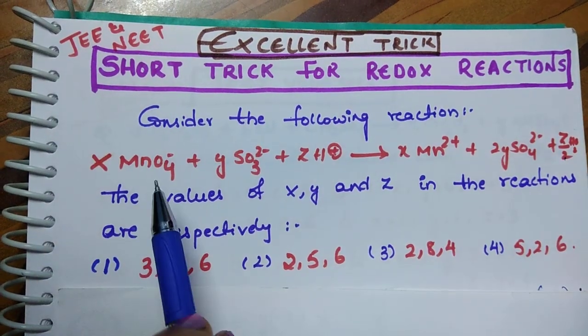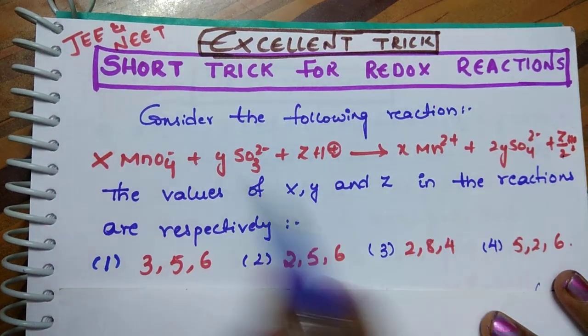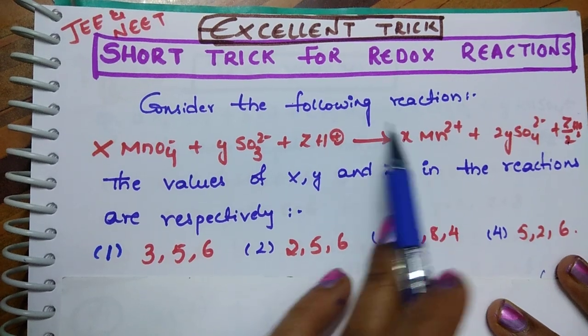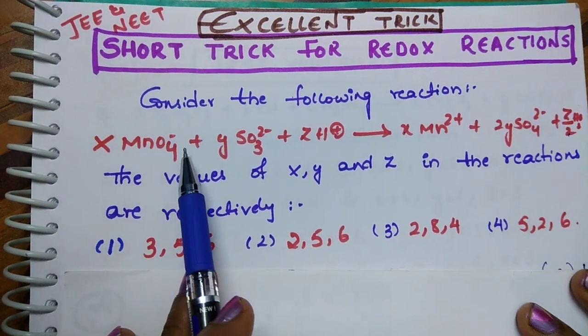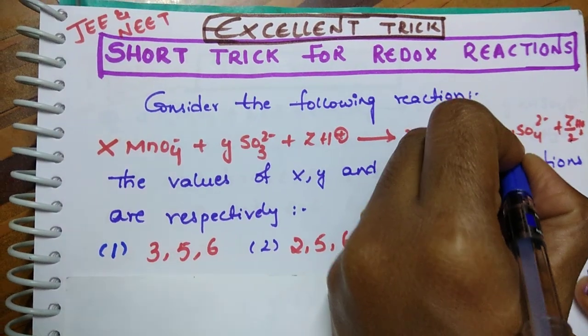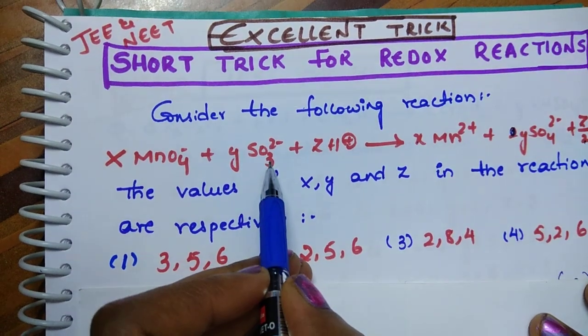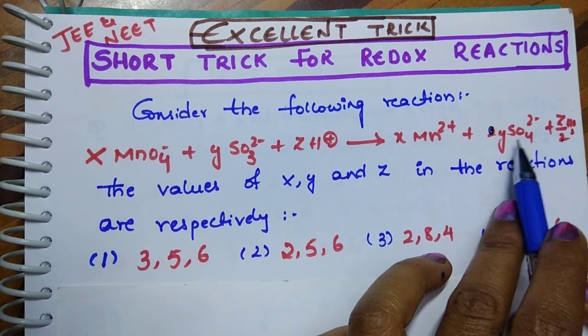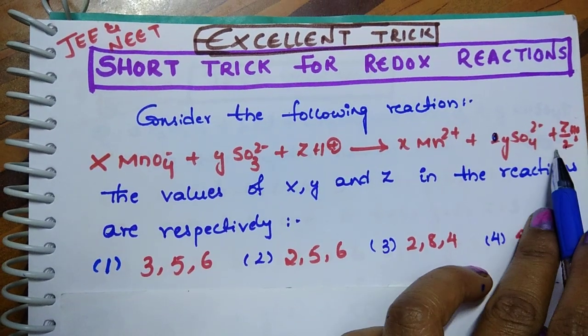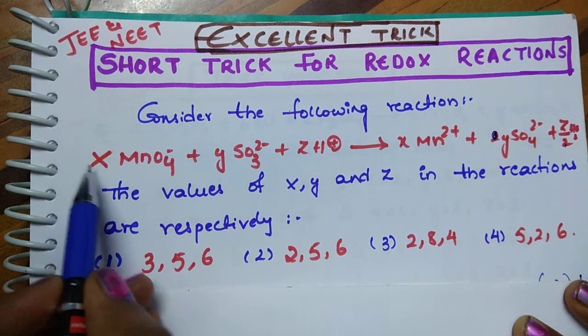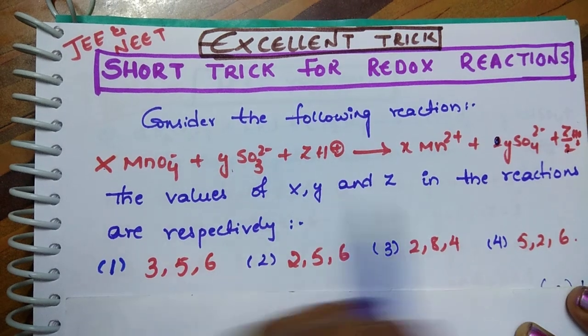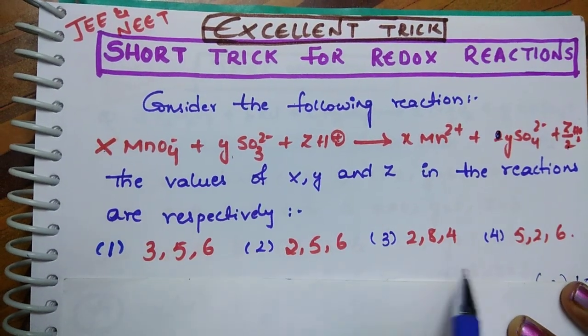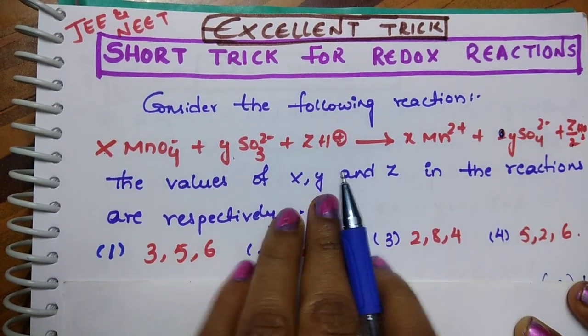This is the question. Consider the following reaction: x MnO4^- + y SO3^2- + z H^+ gives x Mn^2+ + y SO4^2- + z/2 H2O. Here x, y, and z in the reaction are given in four options. You have to balance this reaction and choose the correct option.